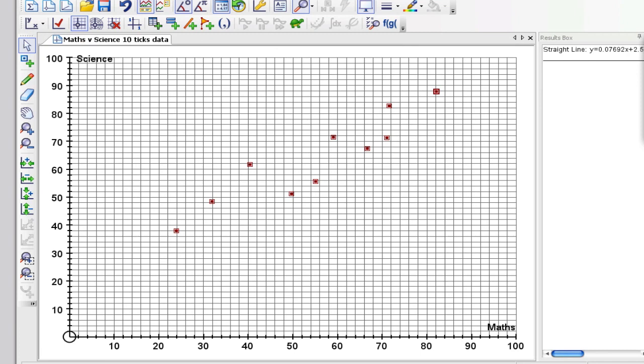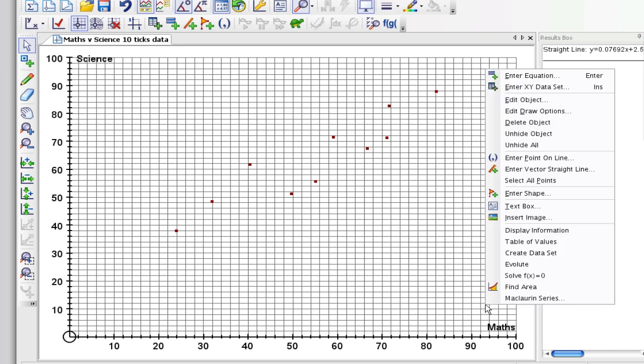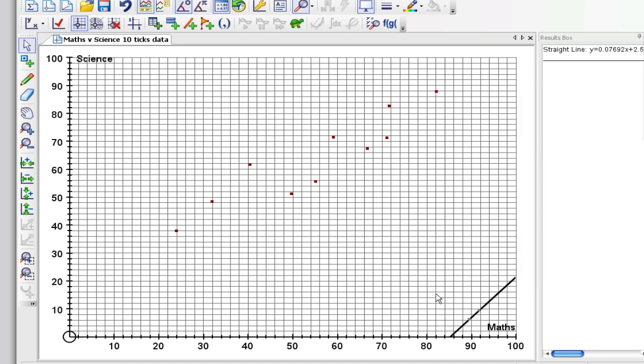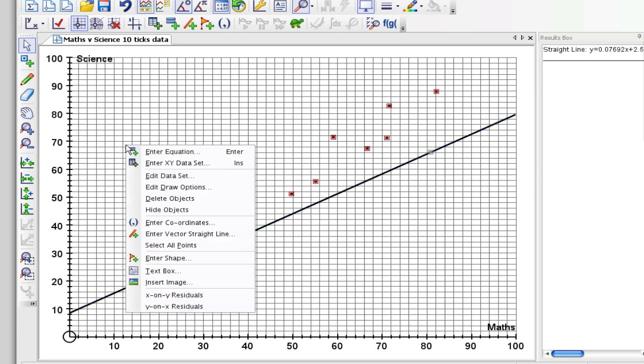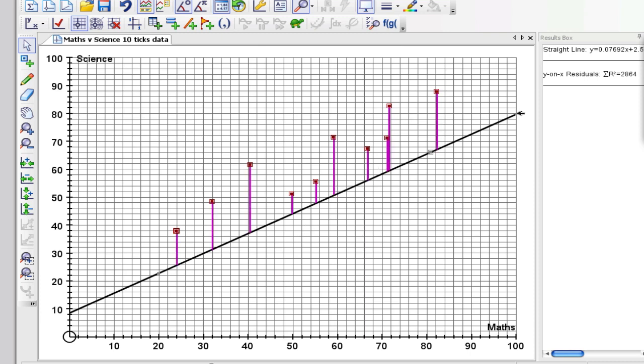So if I just bring up Autograph here and what I want to do is unhide all the objects. I want to move, I want to get a line such that I minimize what's called the residuals. Now I'll show you what that looks like. If I select my data set and then right click I can do the y on x residuals. I'm going to draw them as lines first.